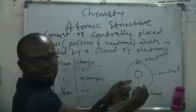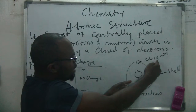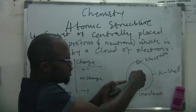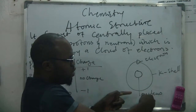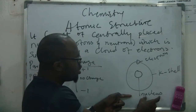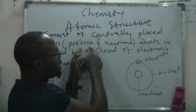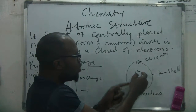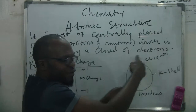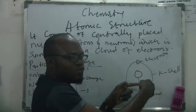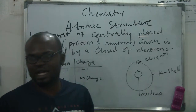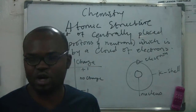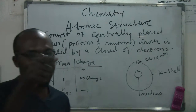If you say that this is an atom, how many electrons do you have surrounding the nucleus? The nucleus is made up of protons and neutrons, with electrons revolving around it. That is the structure of an atom — every atom.